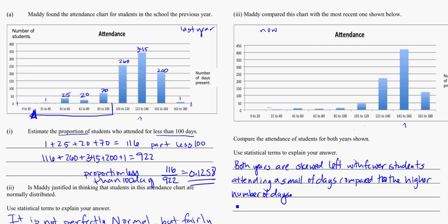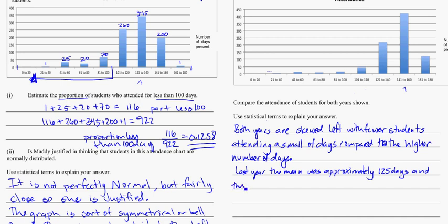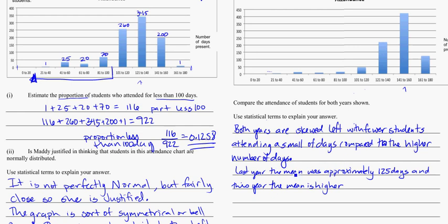So we could say last year the mean was approximately 125 days, and this year the mean is higher, so I need to make some sort of justification about not just state what they are, but make that idea that it is higher, so I'm making a comparison